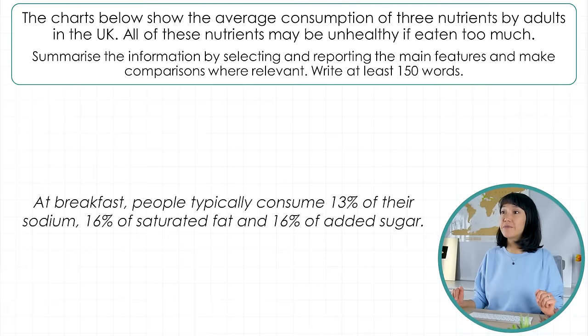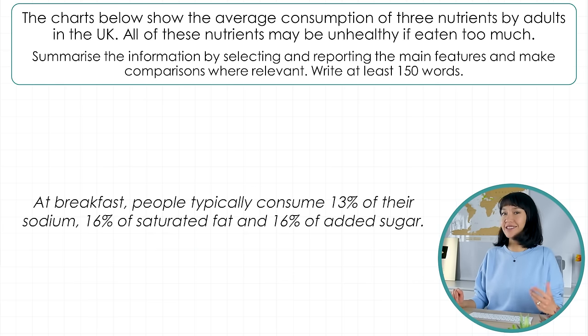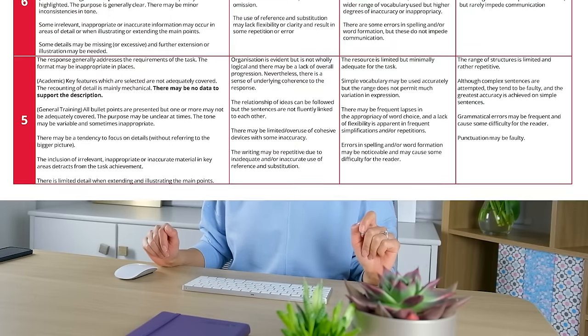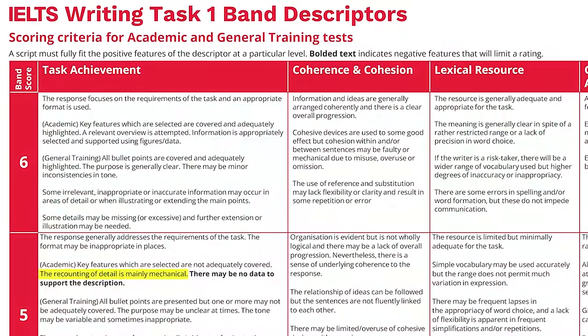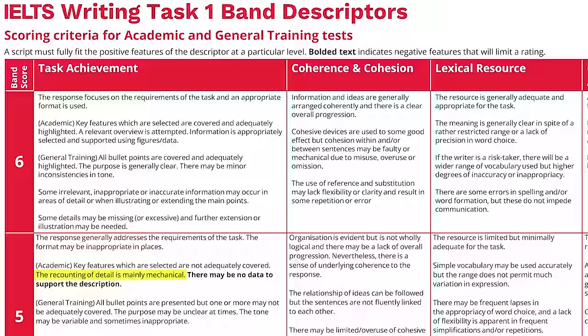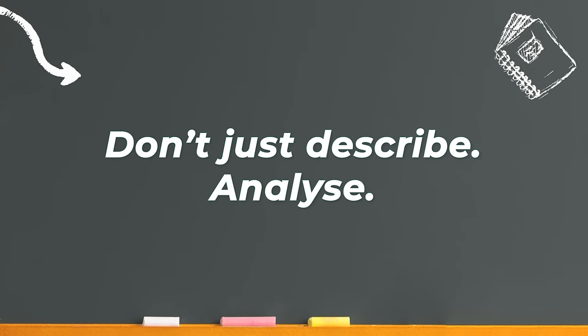Now have a look at this sentence from the body paragraphs: 'At breakfast, people typically consume 13% of their sodium, 16% of saturated fat, and 16% of added sugar.' It's correct, but it's just a description of the chart. If you do this throughout your report, it may be seen as 'the recounting of detail is mainly mechanical' — that's Band 5 in task achievement. Remember the question asks you to summarize the information and make comparisons — it doesn't say 'describe what you see.' So don't just describe — analyze.